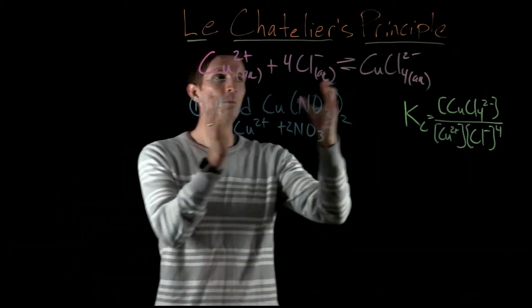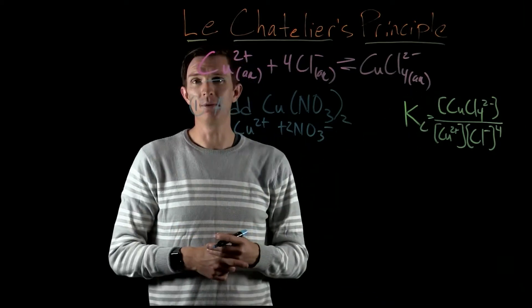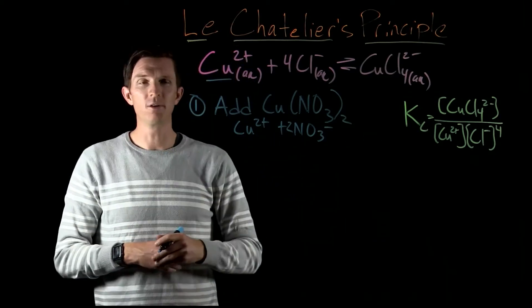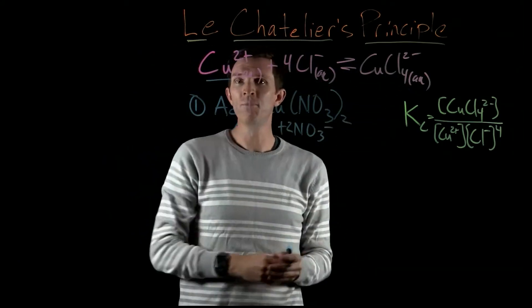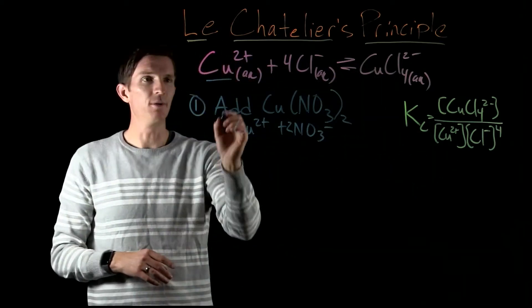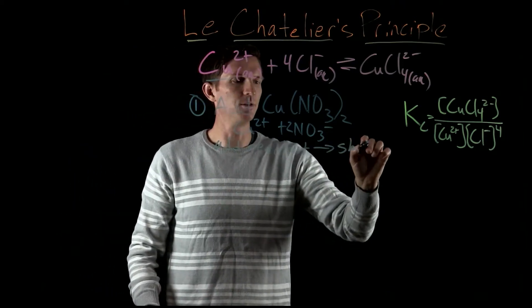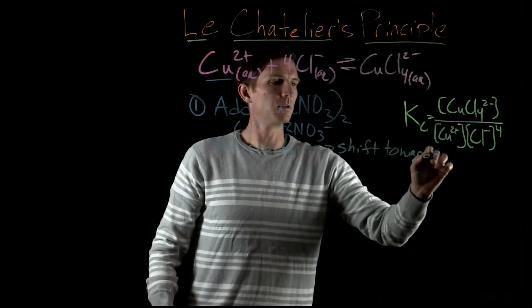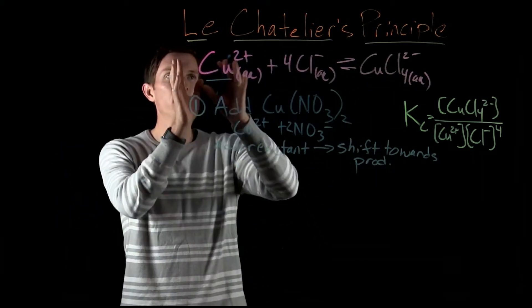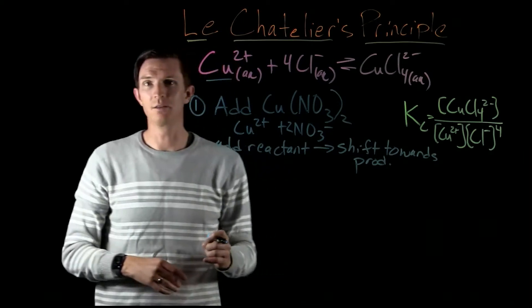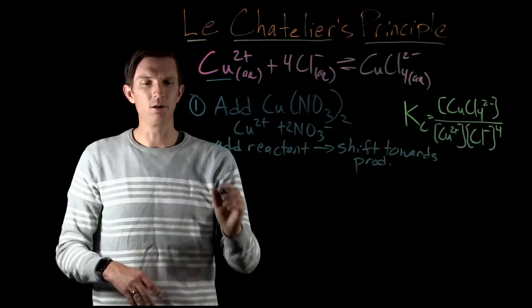So our equilibrium will shift to form more products — shift to the right — to decrease the concentration of our reactants. We've added a reactant, and that shifts the equilibrium towards the products. When we say shift, that means the reaction is forming more products and getting rid of some of the reactants. That's what Le Chatelier's principle means by a shift: directly adding a reactant shifts toward products.